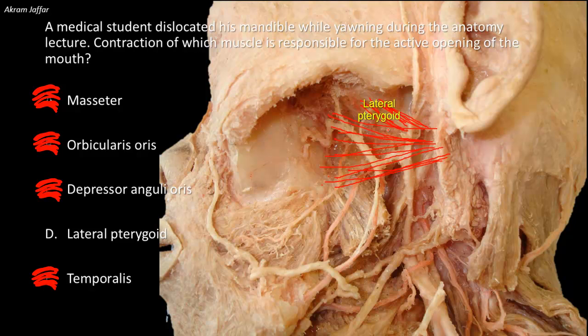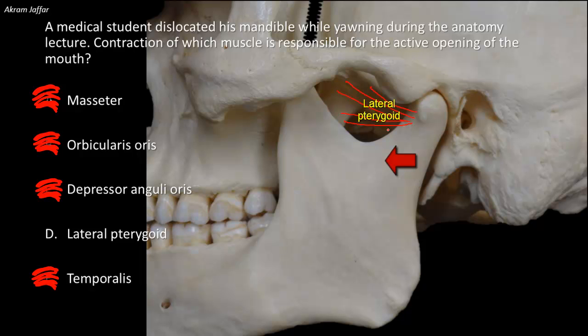Thus, when the lateral pterygoid muscle contracts, it draws the condyle and the disc forward from the glenoid fossa. When the mandible is pulled forwards, it slopes on the articular eminence, and thus the lateral pterygoid muscle is responsible for the active opening of the mouth.